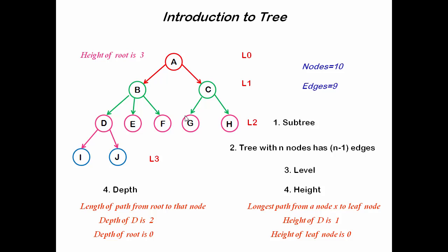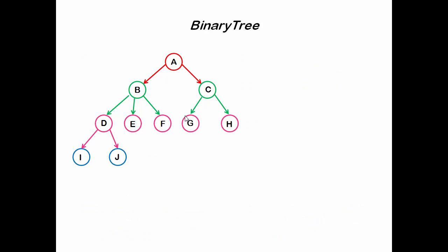Okay, trees are classified into different categories. A simple and most commonly used tree in computer science is called binary tree. A tree with at most two children is called binary tree. For this example, node B has three children, so this is not a binary tree.